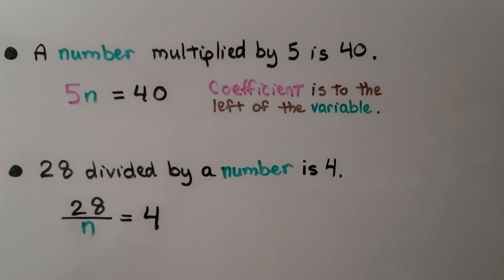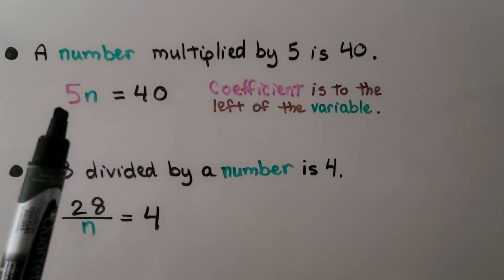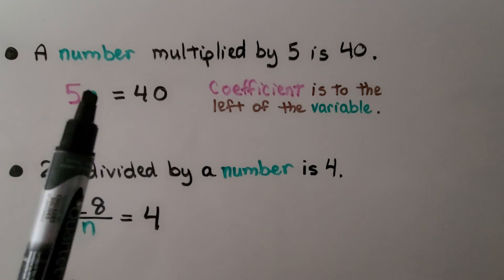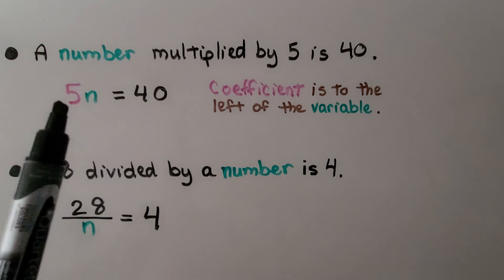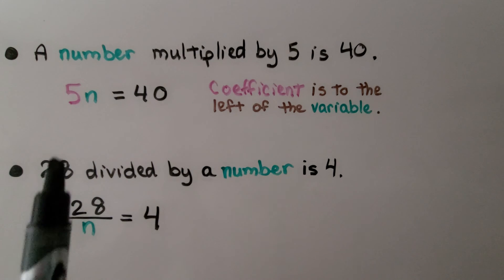We can take the words from a statement and write an equation. A number multiplied by 5 is 40. Remember, the coefficient is to the left of the variable. So, if we're multiplying some unknown number by 5, we write 5 and then n the variable. And it doesn't matter which order we multiply. The commutative property of multiplication says we'll get the same product, but this is the correct way to write it with the coefficient to the left.